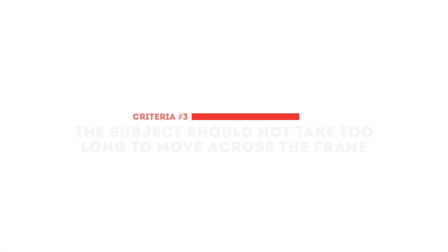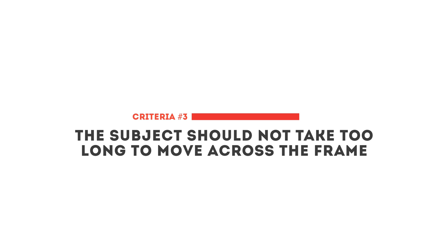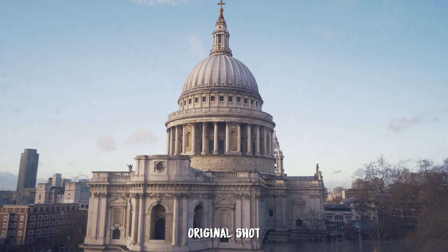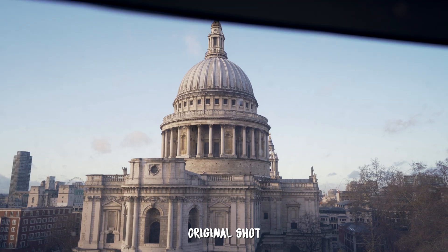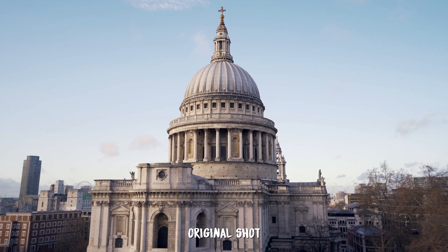The third thing I look for is that the subject shouldn't take too long to move across the frame. Firstly, if it takes your subject five seconds to move across the frame, that's a whole lot of time consuming keyframing work, but also it doesn't really give you the feeling of something wiping across the screen. In most cases, I would probably want it to be less than two seconds. Let's start with this shot of St. Paul's Cathedral in London.